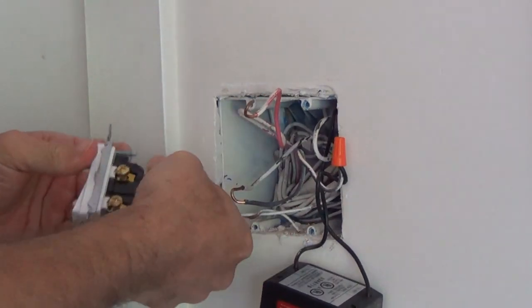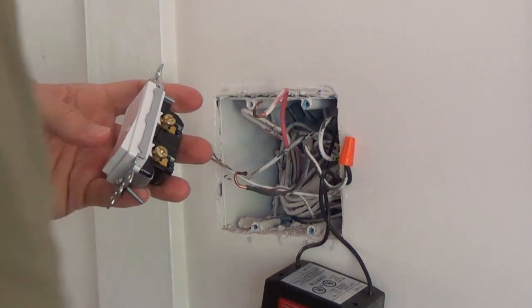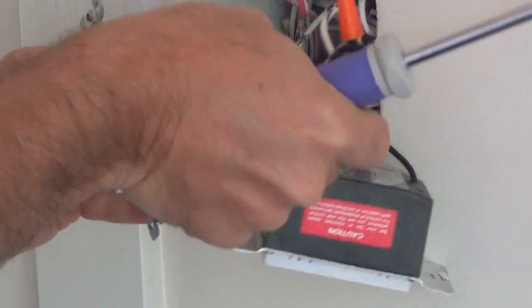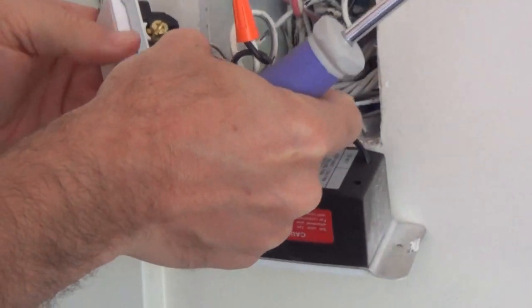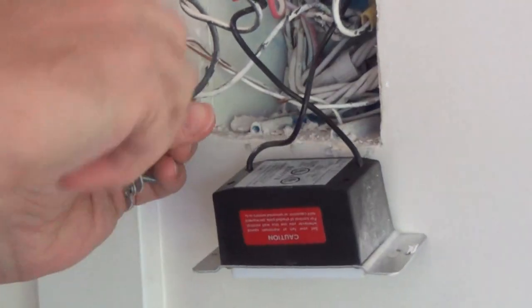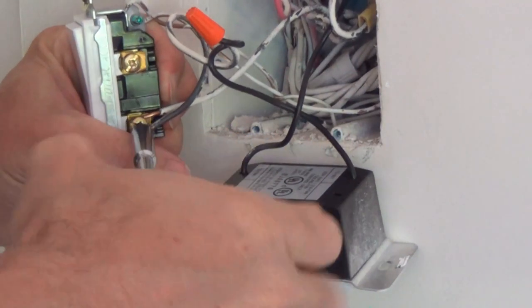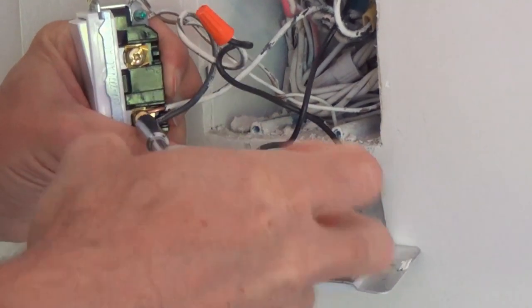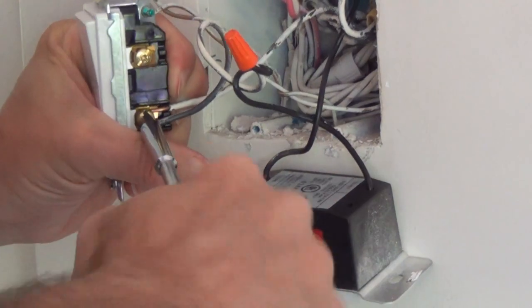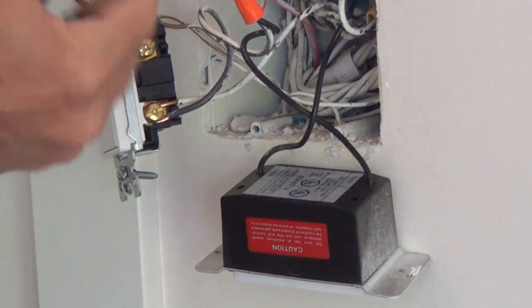And then, go ahead and connect the black to the bottom, just like what you can see. This is on and off. I'm going to go ahead and install the black wire, put it over, make sure it's attached well. Tighten it.